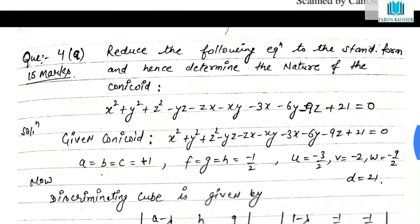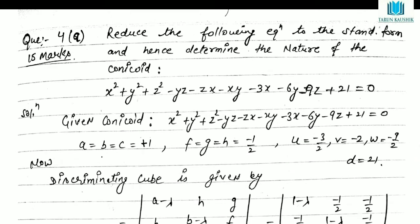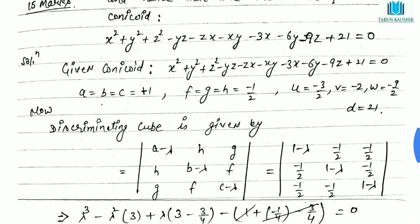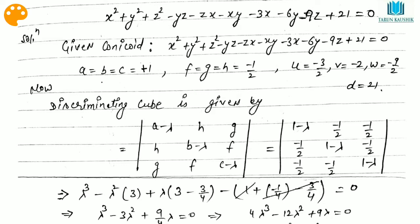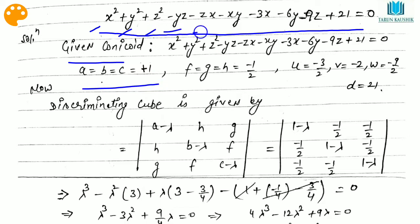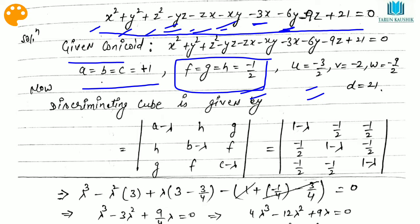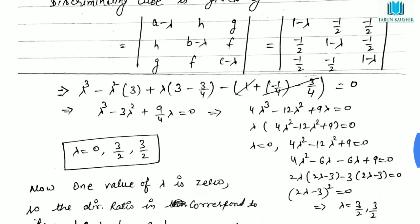Now we look at the actual UPSC 2017 question: reduce the following equation to standard form and determine the nature of the conicoid. From the given conicoid equation, we identify: a = b = c = 1, and f = g = h = -1/2 (since the coefficient 2f gives us half of the written coefficient), u = -3/2, and the values of v, w, and d are also identified.